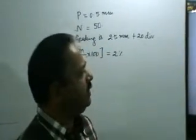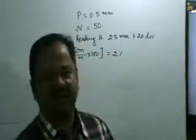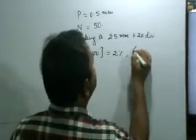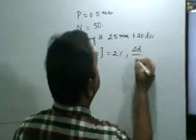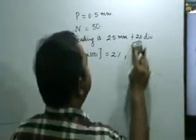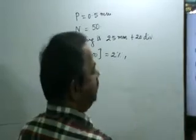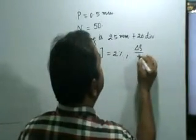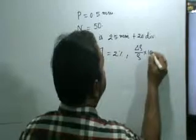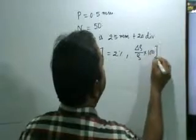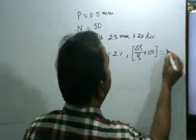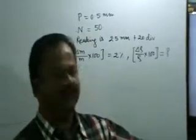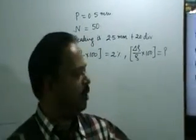The relative percentage error in density is what we need to find. Density we denote as rho, so we have to find delta rho by rho into 100. This is the quantity we need to calculate.